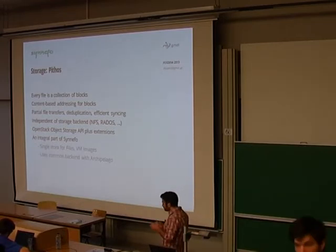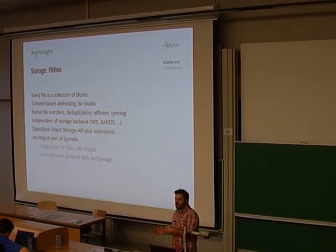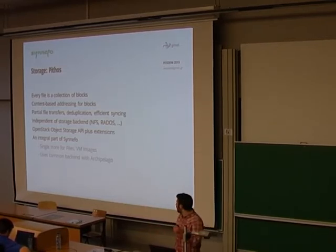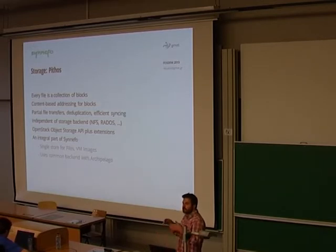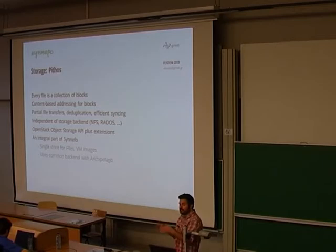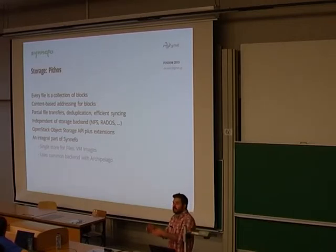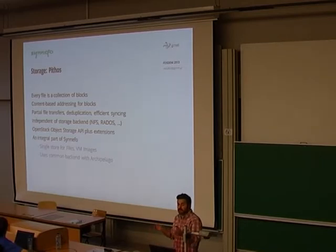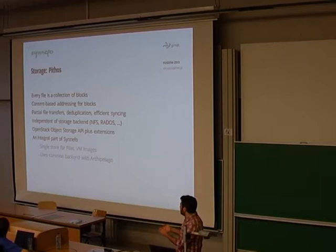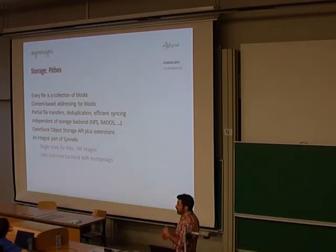So for Pithos, which also implements an OpenStack API, OpenStack object storage API. Every file is a collection of blocks. And these blocks are hashed. And they are referenced based on the hash that they get based on their contents. This gives us very efficient syncing. A client says, I want to upload this file. This file is composed of blocks A, B, and C. The server says, OK, I've got A, I've got B. Can you please give me C so I can create a file for you? The client sends over C. The file is created. We get deduplication. We get partial file transfer because of that.